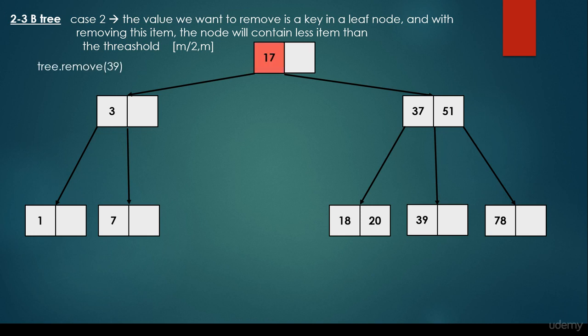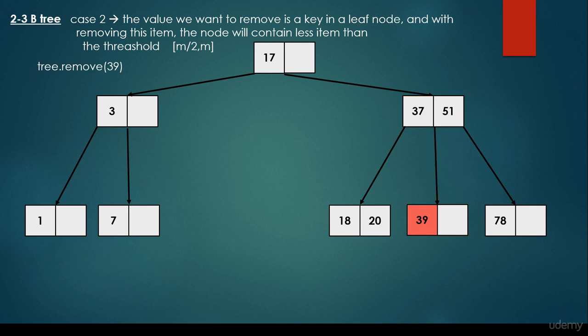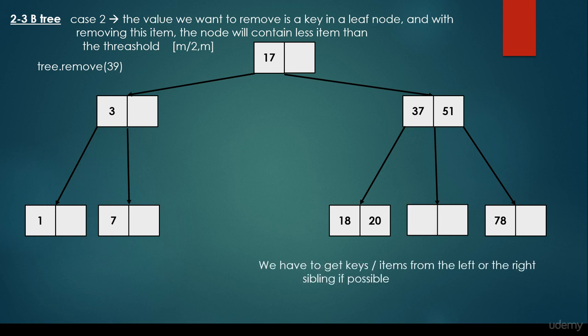Let's remove 39. First we search for it — we go right because 39 is greater than 17, it is greater than 37 but smaller than 51, so we go on that branch, and this is the item. Because this node has a single item, removing it would violate the B-tree properties. So we have to get keys from the left or right sibling if possible. We have 2 siblings: the node with items 18 and 20, and the node with item 78. We prefer the left sibling and swap items accordingly — 20 becomes the new parent key and 37 is pushed down to this node. With this rotation we restore the B-tree properties and it becomes a valid B3.